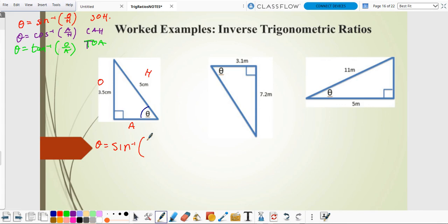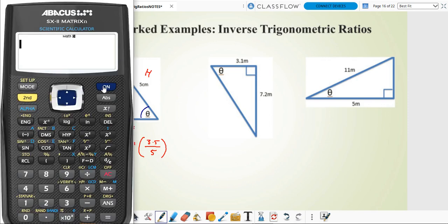So you've got O, 3.5, H which is 5. Just put it in your calculator. So the angle, therefore, must be sine inverse. Remember, you're going to use inverse. So second sine inverse. And then you can use your fraction button if you like. 3.5 over 5. And then close off that bracket.